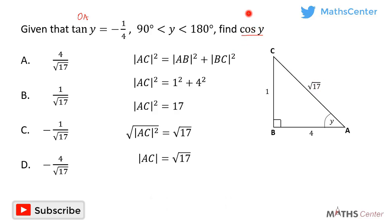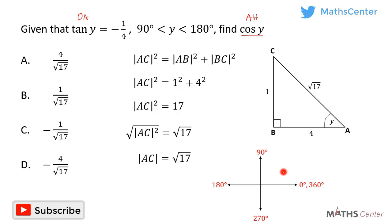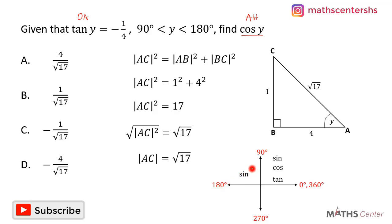Cos equals adjacent divided by hypotenuse. But we must consider the quadrant. Since y falls between 90 and 180 degrees, it is in the second quadrant, where only sine is positive. That is why tan y is negative. Cos y will therefore also be negative in this quadrant.